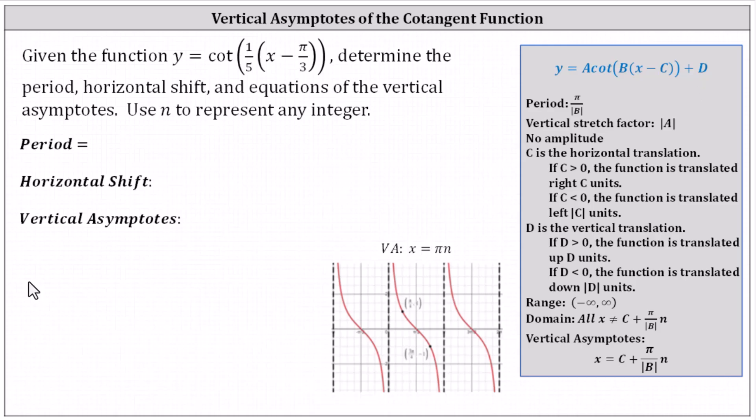c, and d. Notice a, the coefficient, is one. B equals one fifth. C equals pi divided by three. And d equals zero.